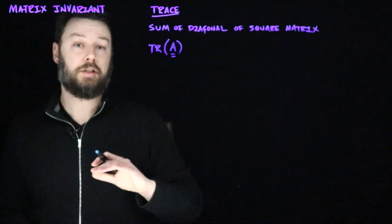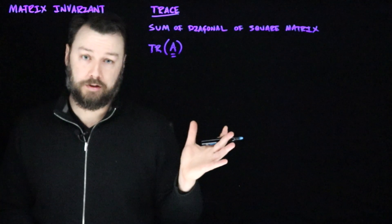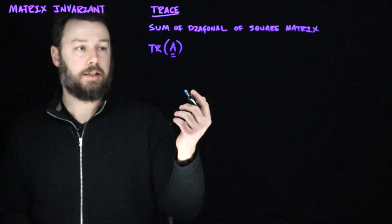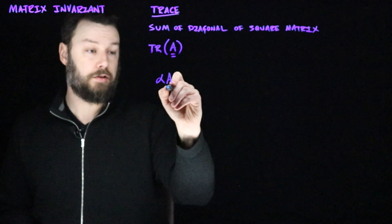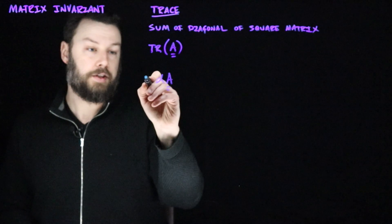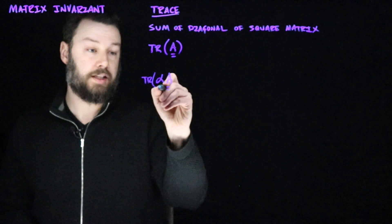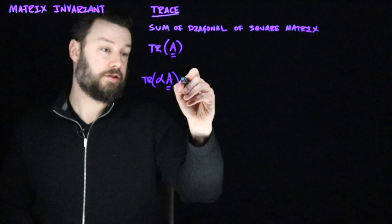And since it's just a sum, it has some nice linearity properties. So for example, it has the property that if I have some scale attached to the matrix A, and I ask what's the trace of that scaled matrix, it's just the scale of the trace.